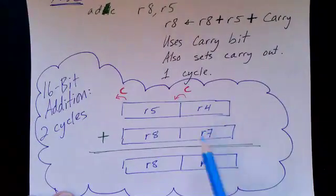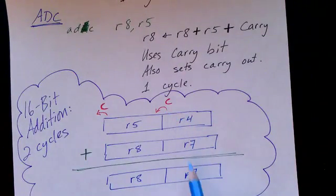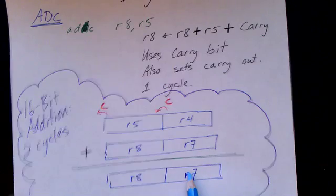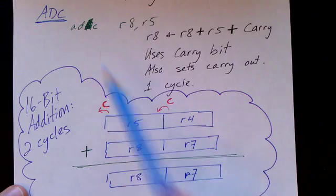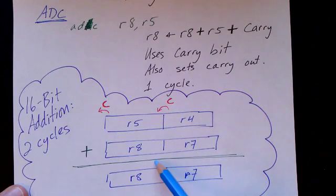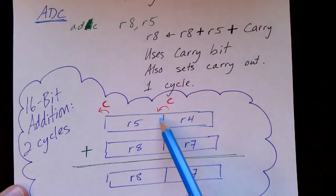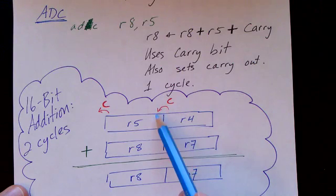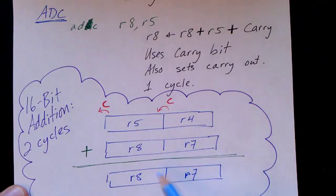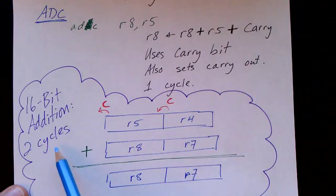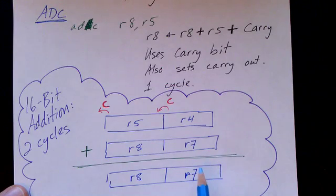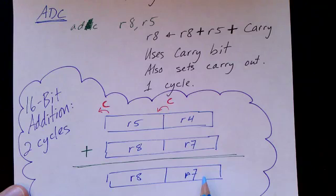We can combine these two instructions to perform 16-bit addition. We added R4 plus R7 with our first ADD instruction, generating a carry and putting the result in R7. If we follow that with an ADC instruction to add register 5 and register 8, it takes the carry from the previous instruction and uses that as the carry in. This performs 16-bit addition in two cycles. This processor can use these two instructions to perform 16-bit addition in two cycles or 32-bit addition in four cycles.